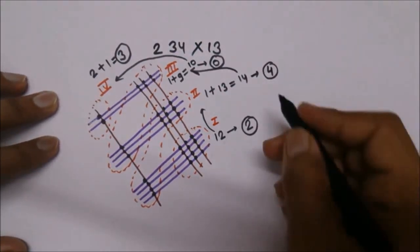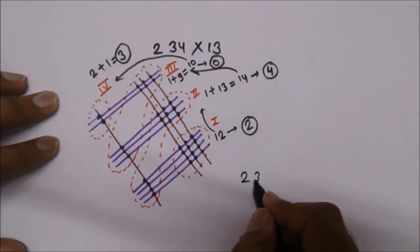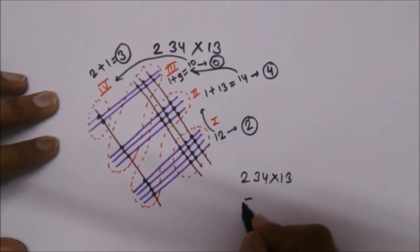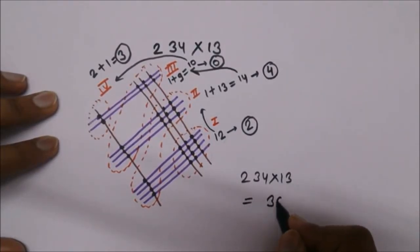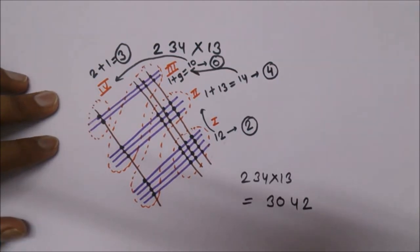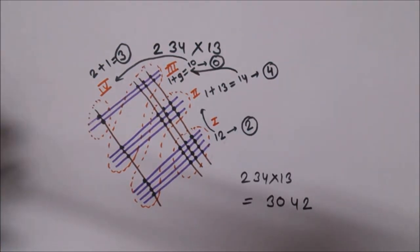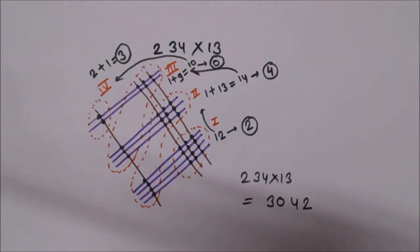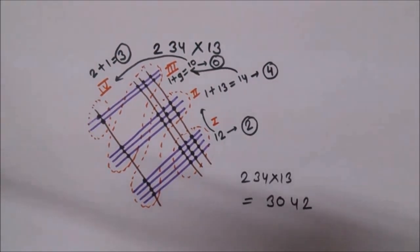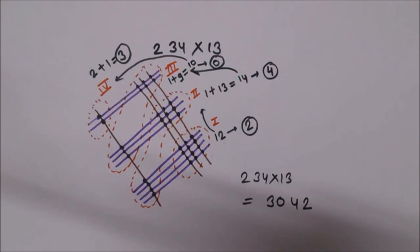So we get 3, 0, 4, and 2 — the answer of 234 multiplied by 13 is 3042. This was all about the trick. I hope you find it very useful. You can use it whenever you want to multiply numbers very fast. If you liked my video, please don't forget to subscribe to my channel. Thank you for watching.